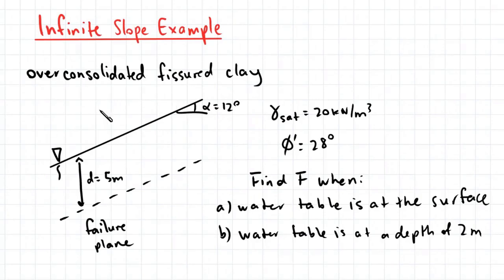So here we have an infinite slope, the soil being over-consolidated fissured clay. The slope is inclined at an angle of 12 degrees and the depth to the failure plane is 5 meters. We also have a water table at the surface, so our saturated unit weight is 20 kN per meter cube.